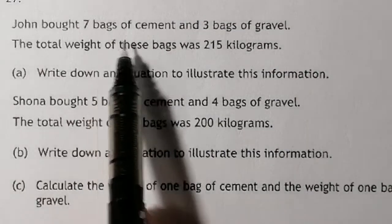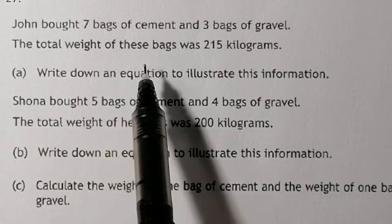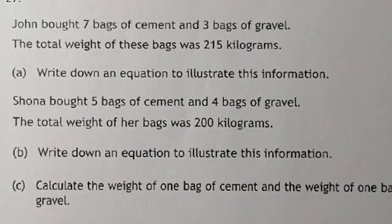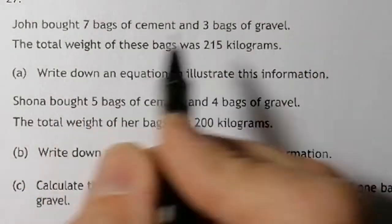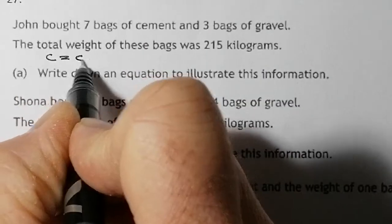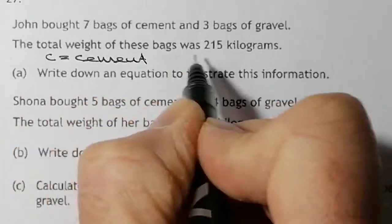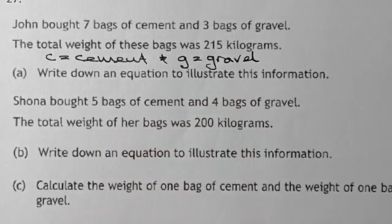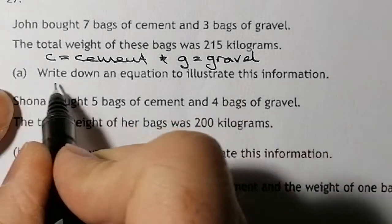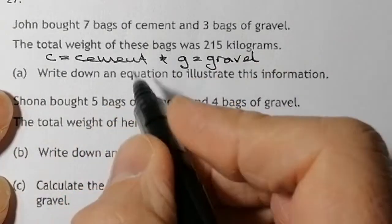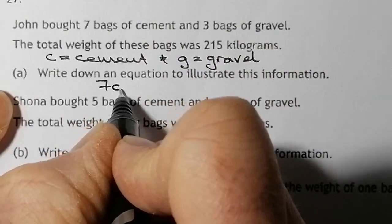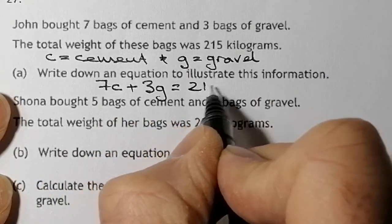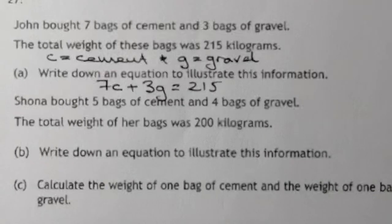So what we've got is John bought seven bags of cement and three bags of gravel, and the total weight of these bags was 215 kilograms. We need to write down an equation to illustrate this. I'm going to say that C is equal to cement and G is equal to gravel. So for part A, seven bags of cement: 7C plus 3G is going to be equal to 215. There's my first equation.